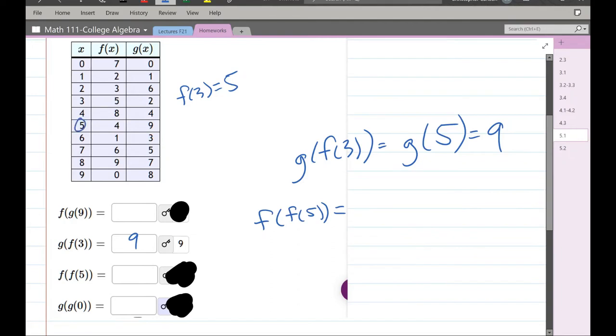Now the input is 5. I'm not using the g column here at all, only applying the f function. Don't look at the third column. We're only going to use the middle column. The input is 5 and the output is 4.